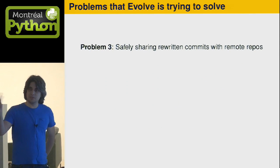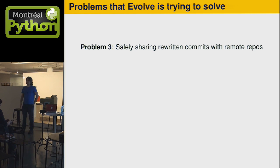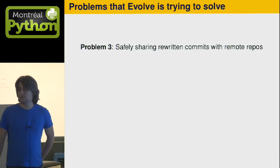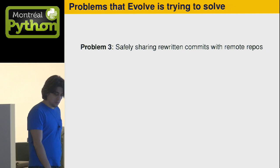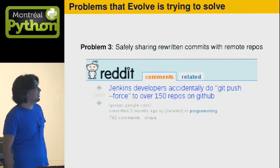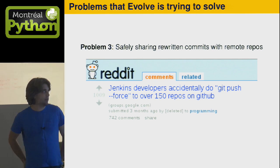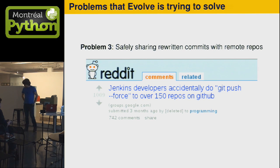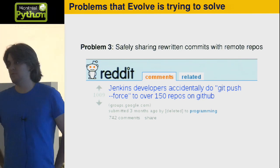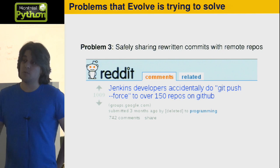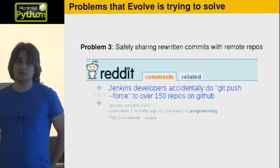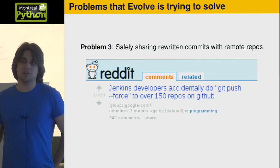A third problem is how do you safely share your commits with other people? The problem here is you want to be able to undo — if you rewrote something, you still want to be able to undo — and you also want to be able to not cause problems for other people. There's a story I like: Jenkins accidentally did git push --force to 150 repos on GitHub, about three months ago, and they had a lot of trouble fixing this. They had to contact GitHub support, contact each other to find out who had the last commit.